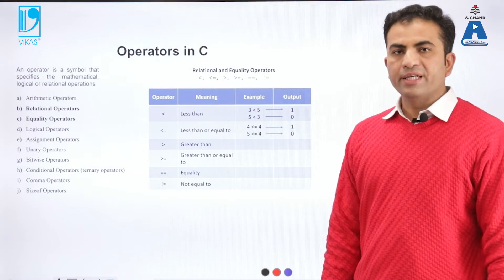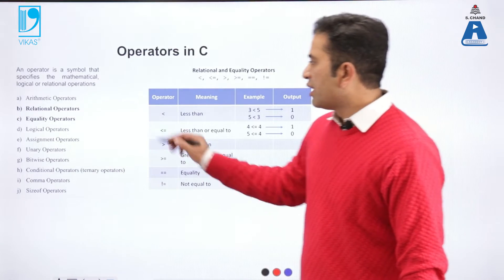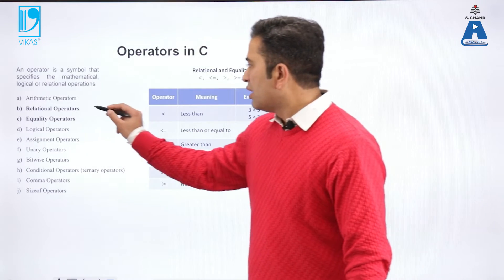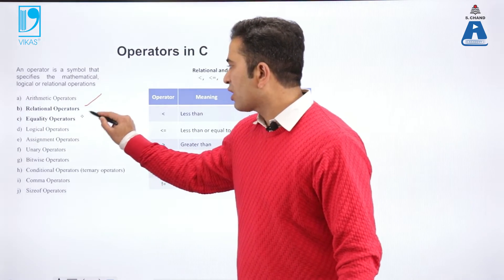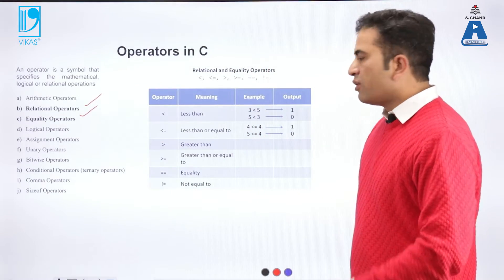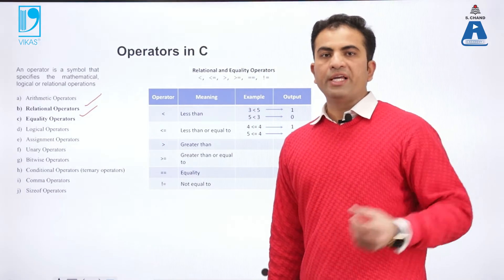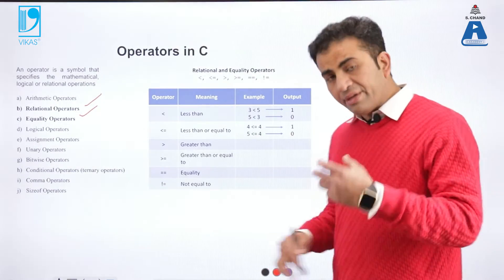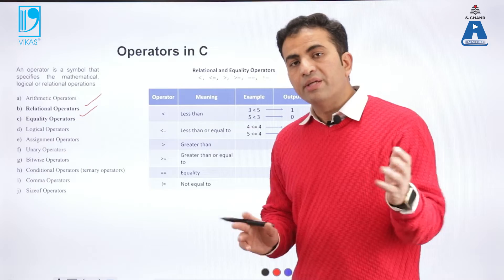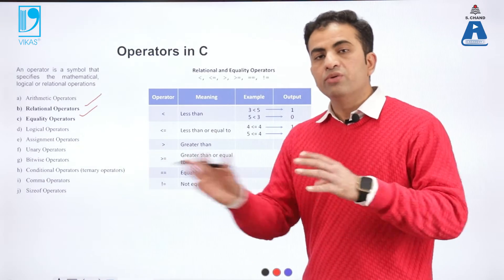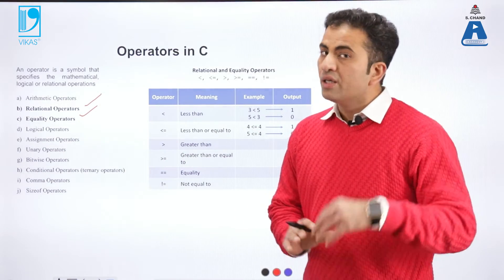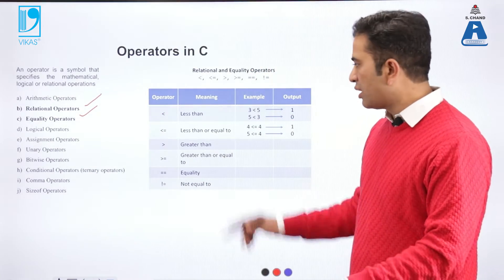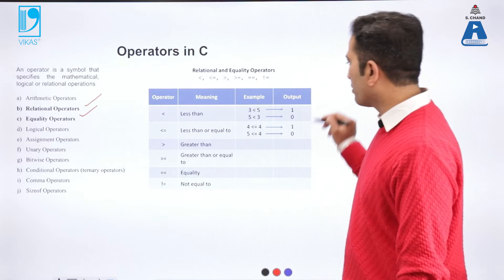The second type of operator is the relational operator, and I will combine the third operator — equality operators — with it. When we need to show the relation between two variables or two numbers, we use relational operators. When we need to show whether a particular number is equal to another or not, we use the equality operator. So we are combining these two in this table.